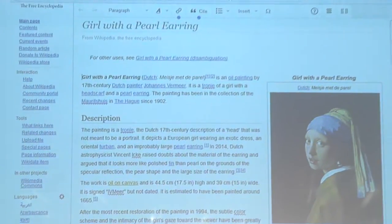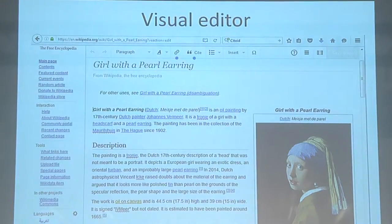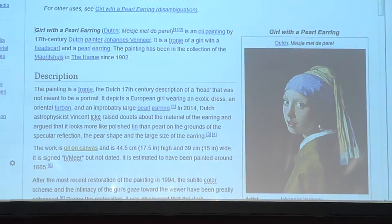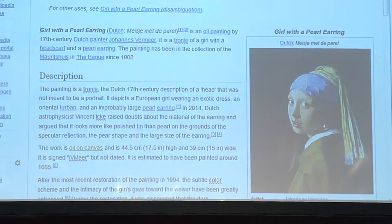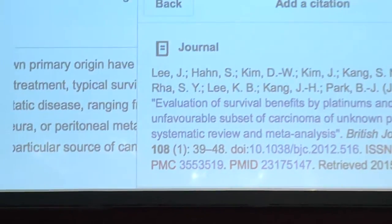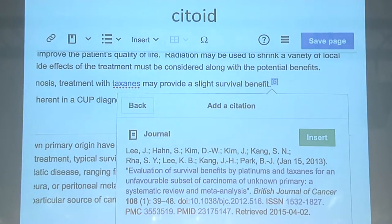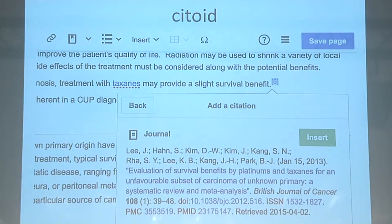Visual editor has been under very active development for the last couple of years. One of the nice features that was added was Citoid — it's a tool where you put in a URL and it will generate the citation for you. If you've ever tried to make citations, you know it's a pain — you have to fill out all these fields: when did you retrieve an article, when was it published, who are the authors. This tool tries to take care of that for you in a standardized format. It makes life a lot easier if you want to write really good articles.